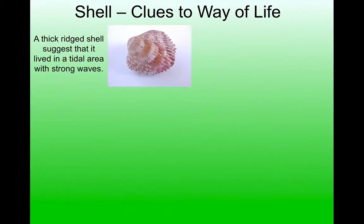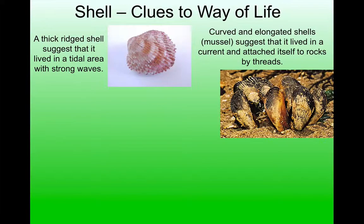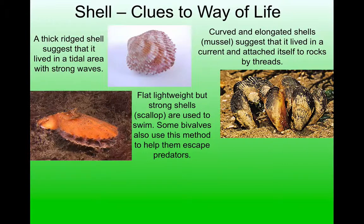The shells can give us lots of clues about how bivalves lived. Thick, ridged shells are adapted to strong currents and waves, perhaps in tidal areas — a cockle would be a good example. Curved, long shells need to cope with strong currents and also help the animal attach itself to rock. Where we see very flat and lightweight shells, perhaps made stronger by corrugations like the scallop, they swim — a heavy thick shell would be a big disadvantage for an animal that needs to move itself around quickly.